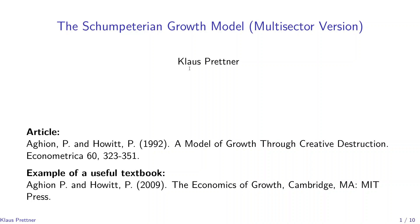This video deals with the Schumpeterian growth model, specifically the multi-sector version. The previous video was about the one-sector version, and here I describe the version of the model that leads to a smooth growth rate over time. This is based on the article by Aghion and Howitt, 'A Model of Growth Through Creative Destruction,' published in Econometrica in 1992, presented in the simplified version from their 2009 textbook, 'The Economics of Growth,' published by MIT Press.